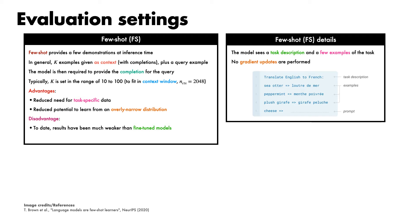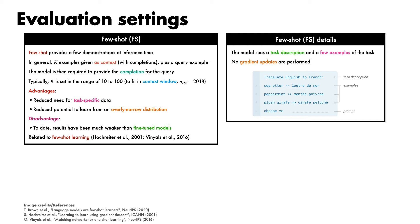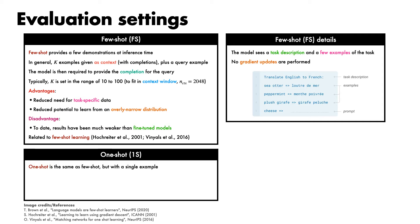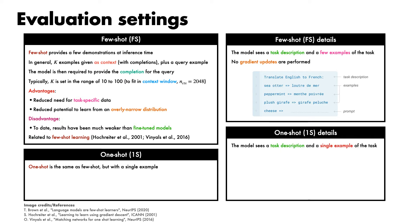It's worth noting that the few-shot terminology used here is related to other work that has sought to learn from few examples, such as work by Hochreiter et al. on general meta-learning strategies, and the one-shot matching networks of Vinyals et al. In each case, the goal is to learn on a broad distribution of tasks — which in the case of GPT-3 is implicit in the training data — then rapidly adapt to a new task. One-shot is essentially the same as few-shot, but with a single example. In particular, the model sees a task description together with a single example of the task, and no gradient updates are performed.